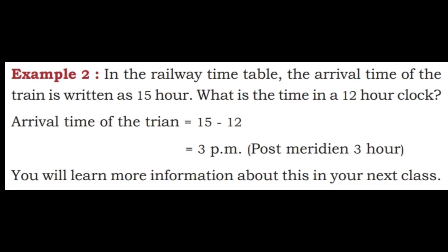Example 2: In the railway timetable, the arrival time of the train is written as 15 hours. What is the time in a 12-hour clock? Arrival time: 15 minus 12 equals 3 PM — post meridian 3 hours. You will learn more information about this in your next class.